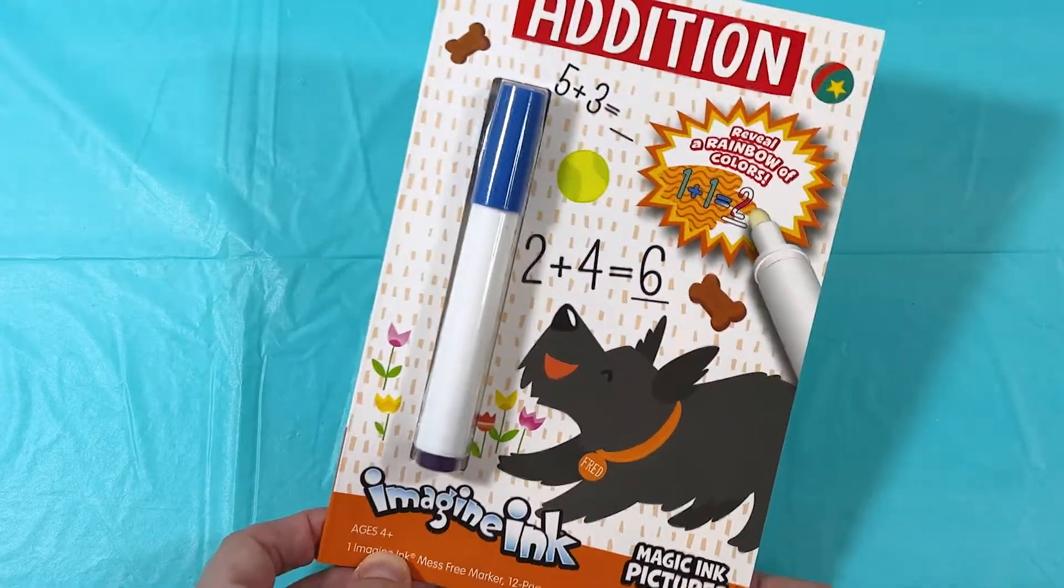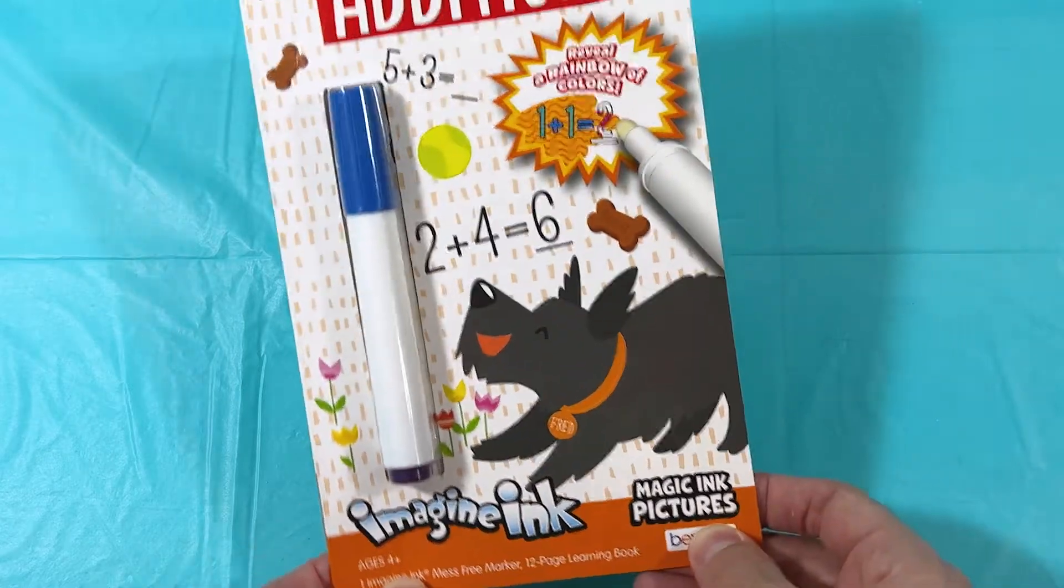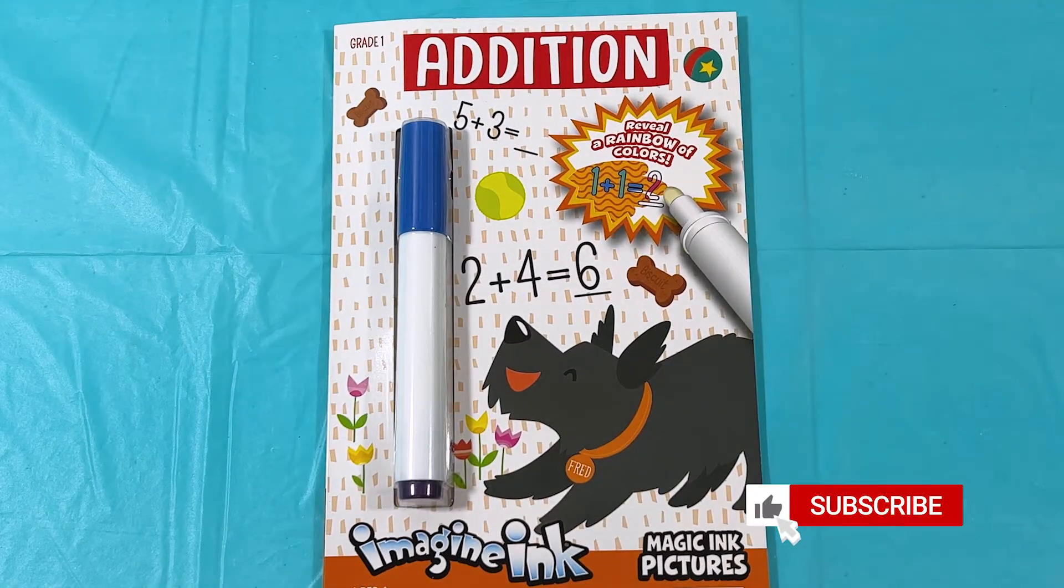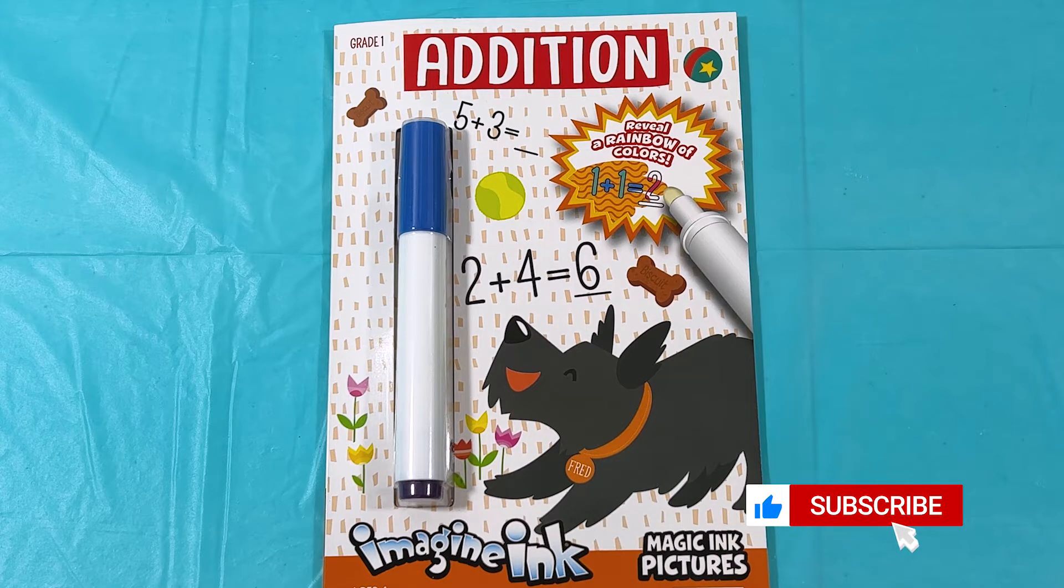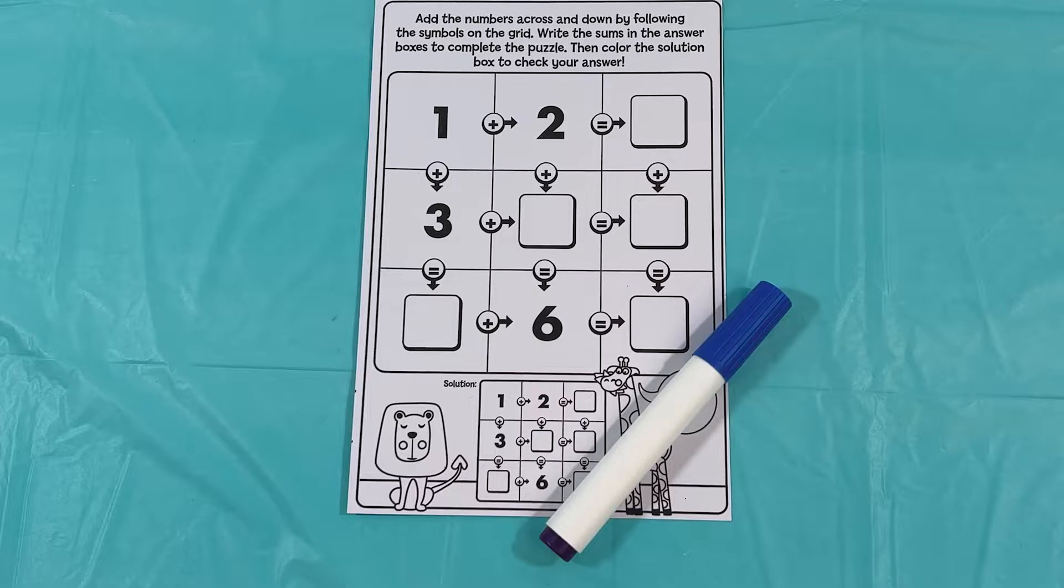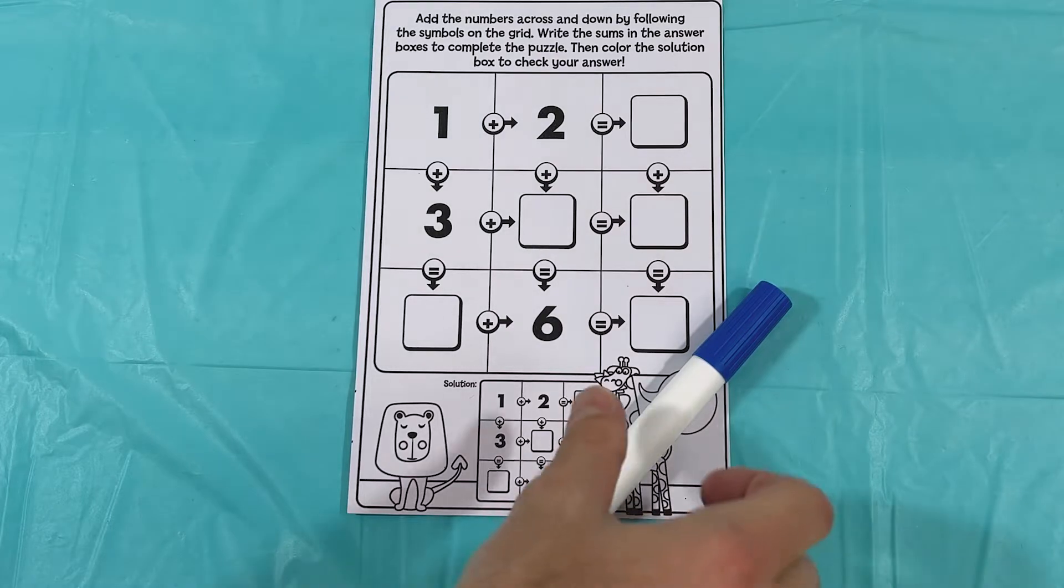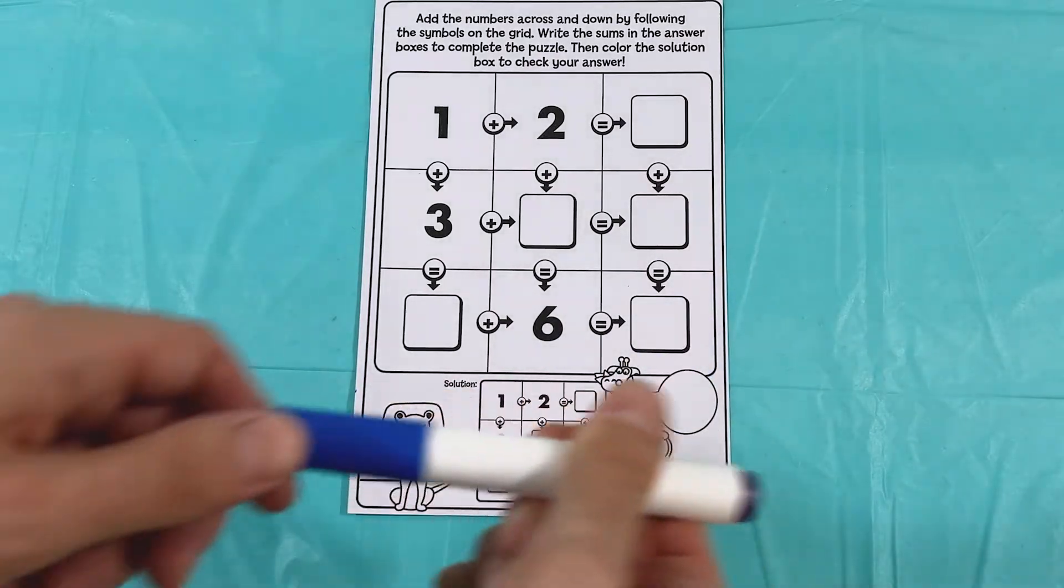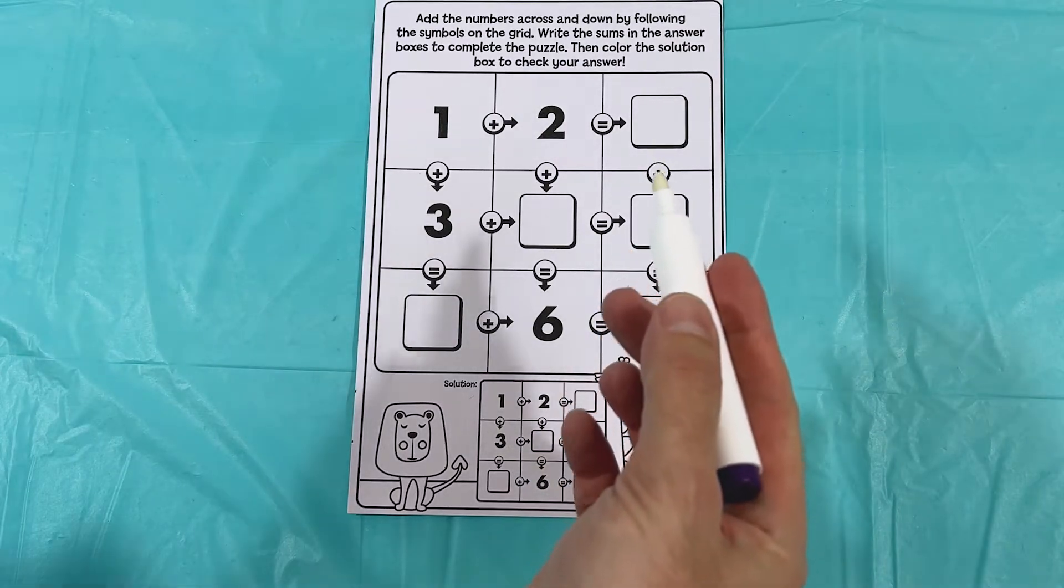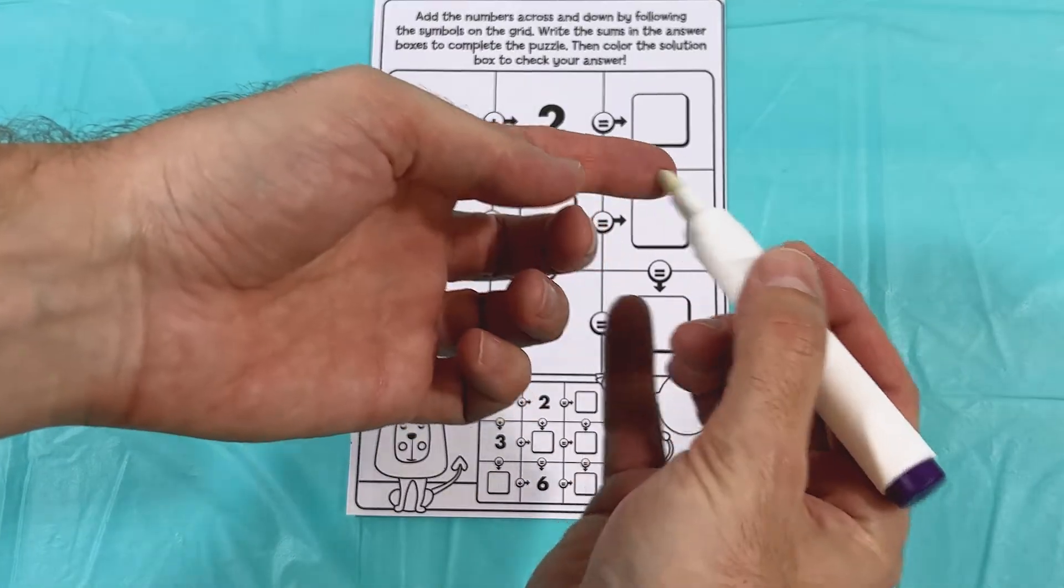Addition, addition, I'm on a mission to teach addition. Oh, hello everyone! Today we're going to learn about addition. I've already got my imagine ink book and pen out, so let's get started. All right, so we got our first page out and we also have our imagine ink marker. For those of you who don't know, imagine ink is a special type of marker that only writes on imagine ink paper. It will not write on anything else, it's clear.